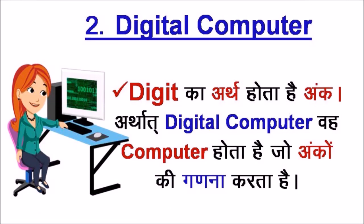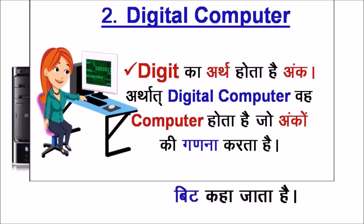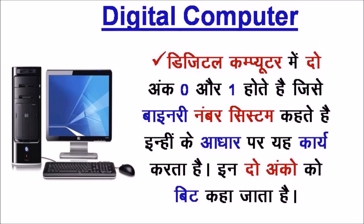Digital Computer वह Computer होता है जो अंकों की गणना करता है। Digital Computer में दो अंक 0 और 1 होते हैं, जिसे Binary Number System कहते हैं। इन्हीं के आधार पर यह कार्य करता है। इन दो अंकों को bit कहा जाता है।